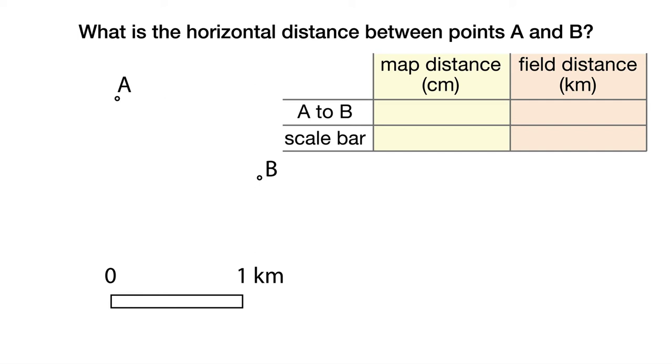We have two horizontal rows, one for the map and field distances from A to B, and the other for the map length of the bar scale and the field distance it represents.